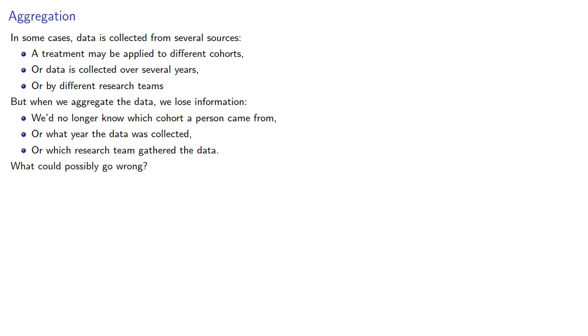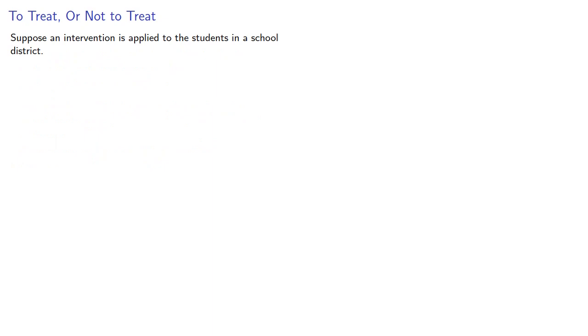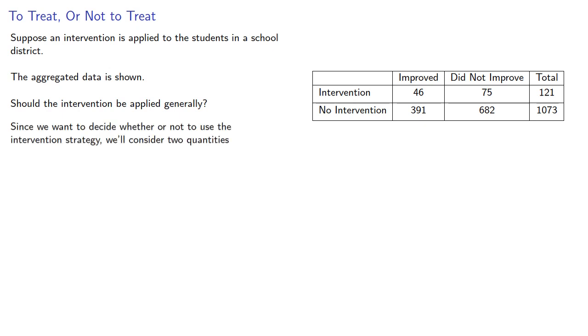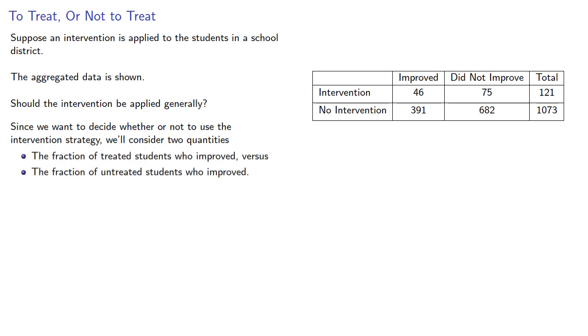What could possibly go wrong? For example, suppose an intervention is applied to the students in a school district. The aggregated data is shown — should the intervention be applied generally? Since we want to decide whether or not to use the intervention strategy, we'll consider two quantities: the fraction of treated students who improved versus the fraction of untreated students who improved.